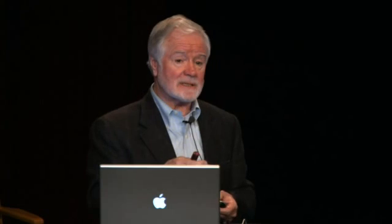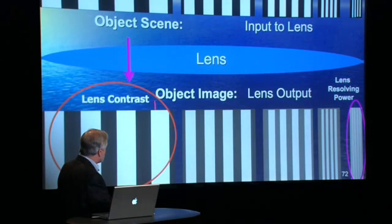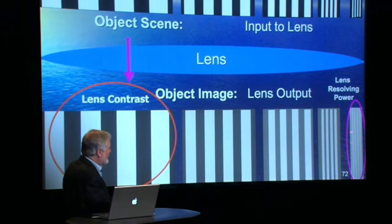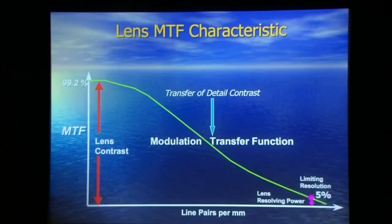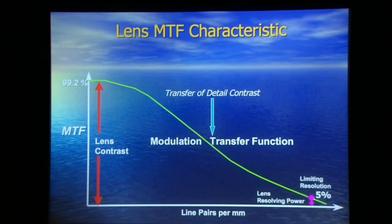Now it goes into the camera, and the camera is a sample system. It's going to sample, and it has an MTF. So when you look at your camera output, it is the MTF of the lens multiplied by the MTF of the camera. The formal definition of lens contrast is a very low-frequency measurement, and the formal definition of resolving power is where you just fail to distinguish between the black and white. If you measure those on the output of the lens and plot them, you get a curve — the modulation transfer function curve, the MTF curve.